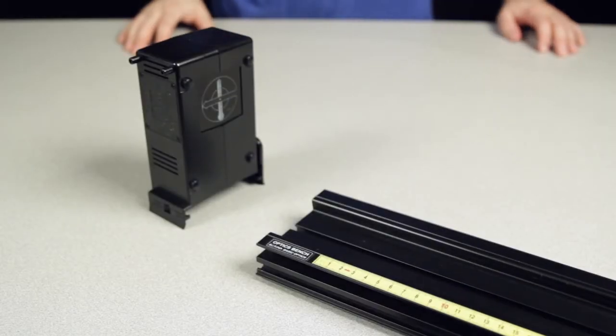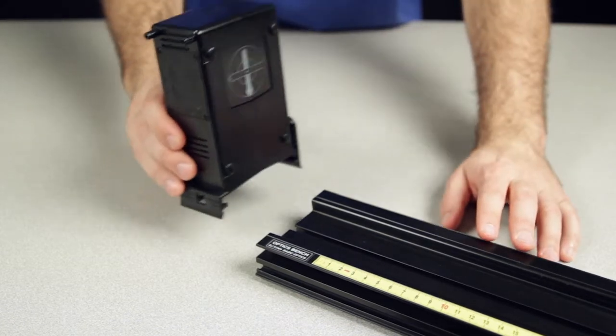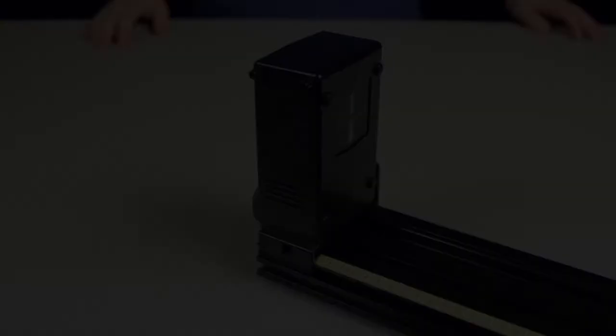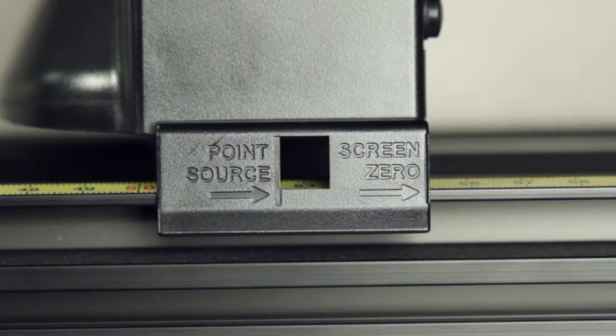To use the light source as an illuminated object, mount it vertically on an Optics Track or carriage, with the crossed arrow target facing down the length of the track. Marks on the tabs at the base of the light source indicate the horizontal position of the object's screen.